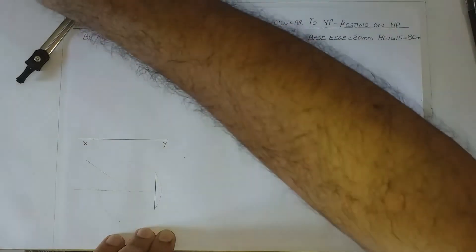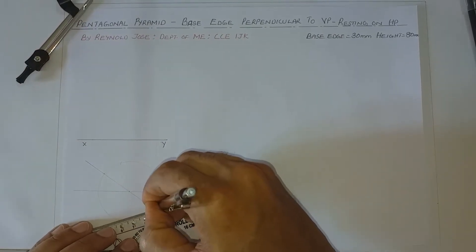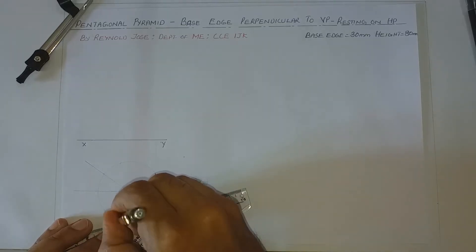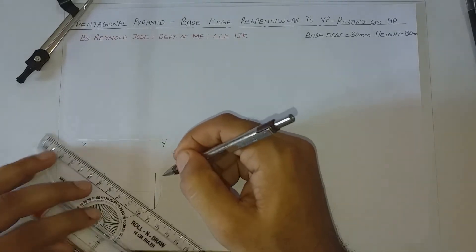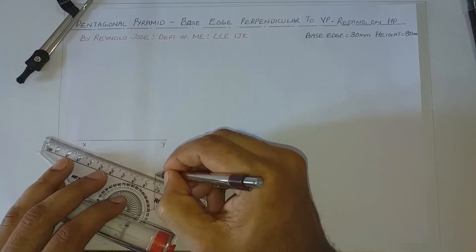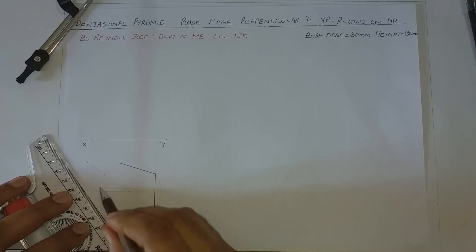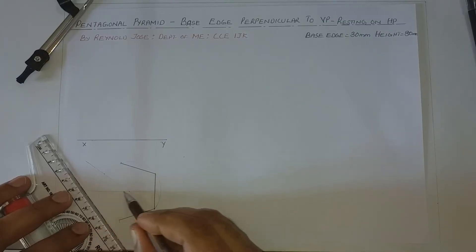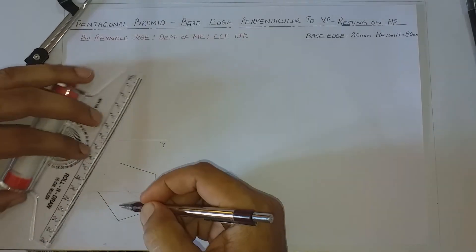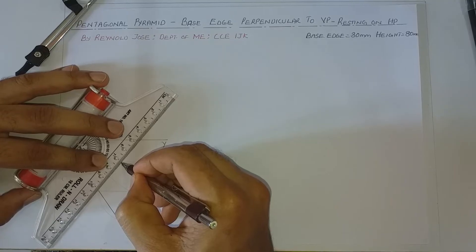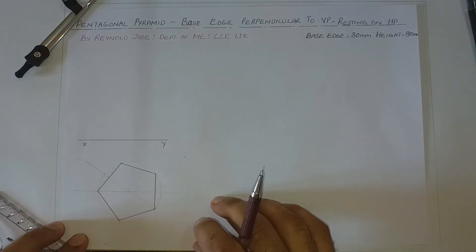Cut another arc to this side such that it meets the circle already drawn. Now from this end, let us draw a straight line to the meeting point of this arc and the circle. And from this point, again another straight line to this end. Now from this point to the meeting point of the circle and the perpendicular bisector, again one more line connecting these two points. This is the top view of a pentagon.